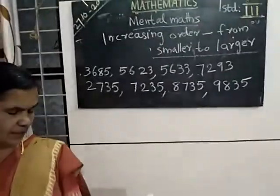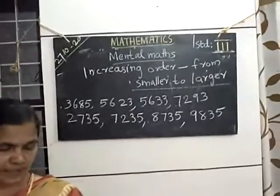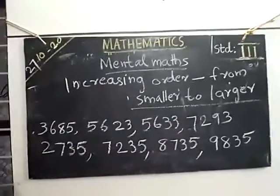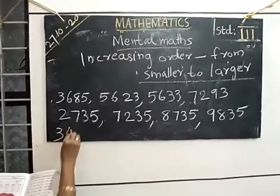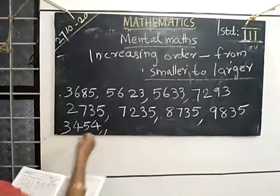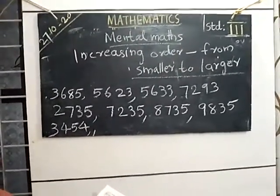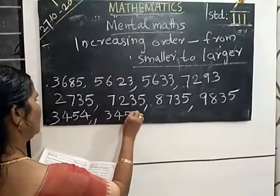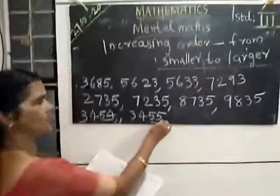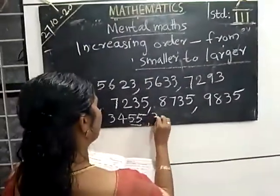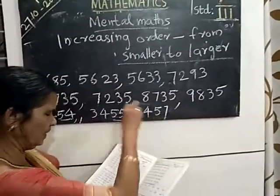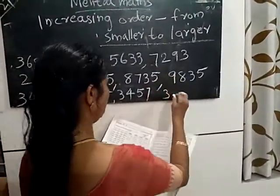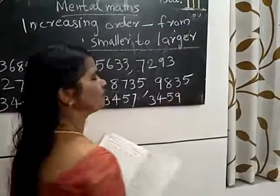Understand? Next, you see here are four numbers. Which is the smallest digit in thousands? 3. That number you write first: 3,454 — that is the smallest number there. Then much more larger: 3,455. Here 54, here 55. Understand? Then next number: 3,457 — here 55, here 57. Next you have 3,459.